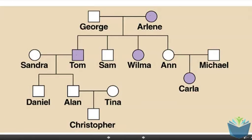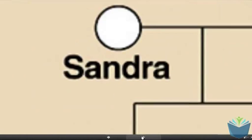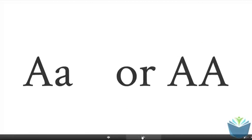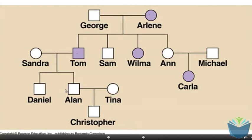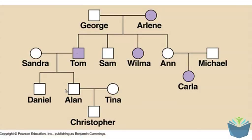Another individual we might want to find out the genotype of is Sandra. We actually can't tell what her genotype is — she could be heterozygous or she could be homozygous healthy. The reason you can't tell is if you look at her two kids, Daniel and Alan, they don't have the disease, so we can't determine whether they are heterozygous. Sandra could be either big A, small a or big A, big A. We know she can't be a sufferer because she hasn't got the condition. The only way you could confirm whether she's heterozygous is if she had a child that suffered from the disease.